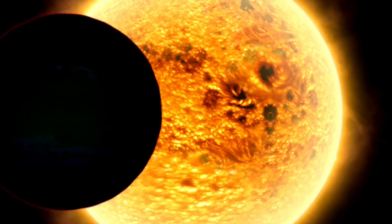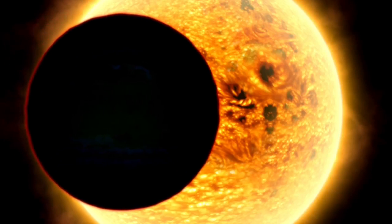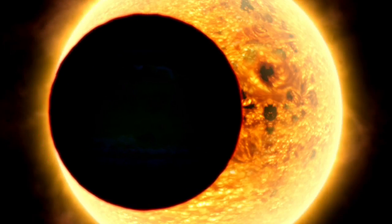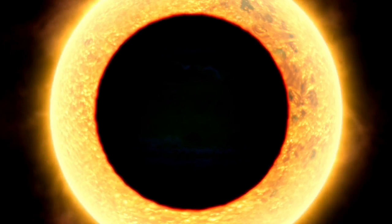Planets around other stars have been detected before, but usually indirectly by looking for clues like the wobbling motion of a star as a planet orbits it, or a star getting dimmer as a planet passes in front of it.